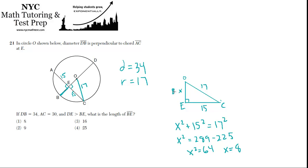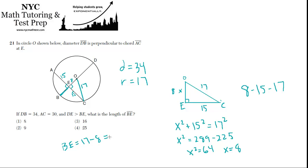So x must equal 8, meaning EO is 8. You might also remember to memorize some of the basic Pythagorean triples — it'll save you a lot of time as a geometry student. 8, 15, 17 is a Pythagorean triple, so keep that in mind. We know EO is 8, and the whole radius is 17, so BE must be the difference: 17 minus 8, which means BE is 9 — that's choice 2.